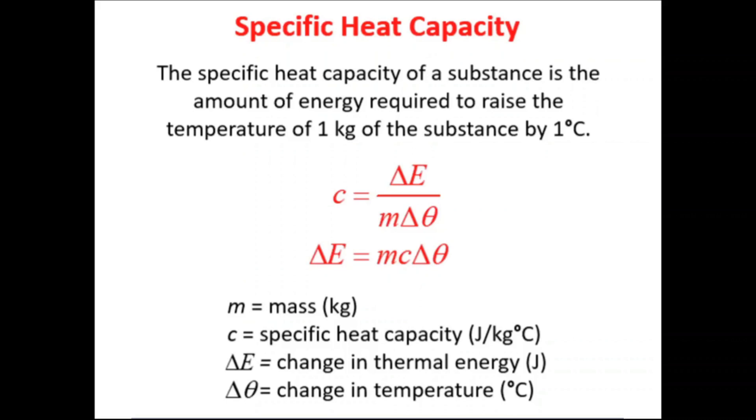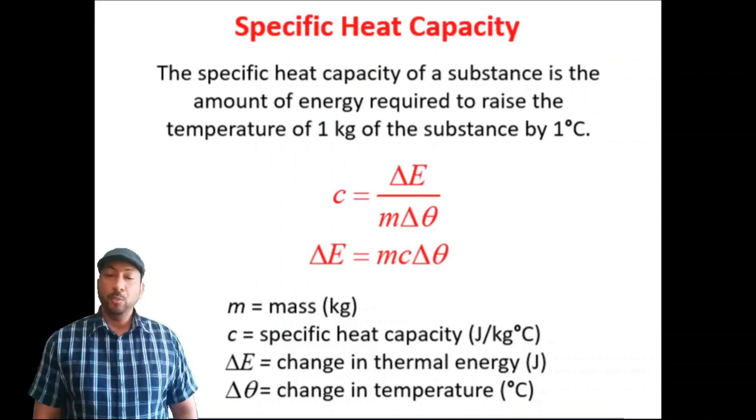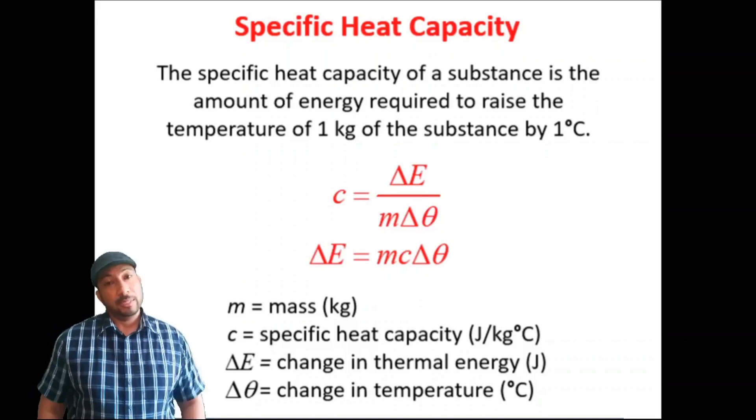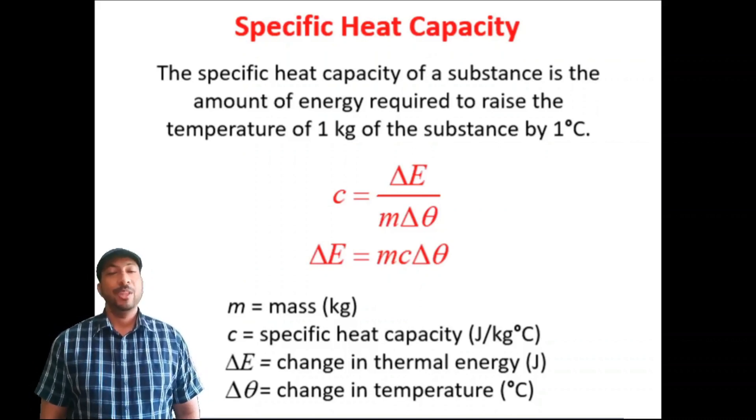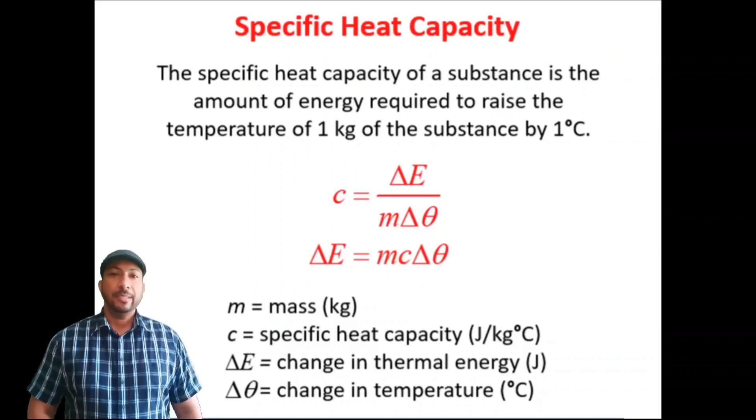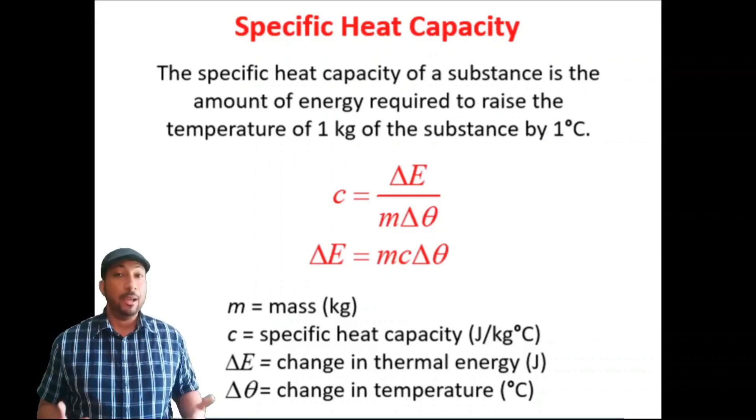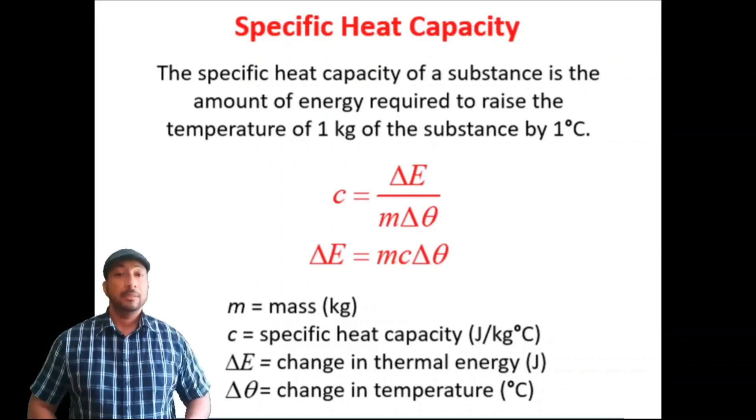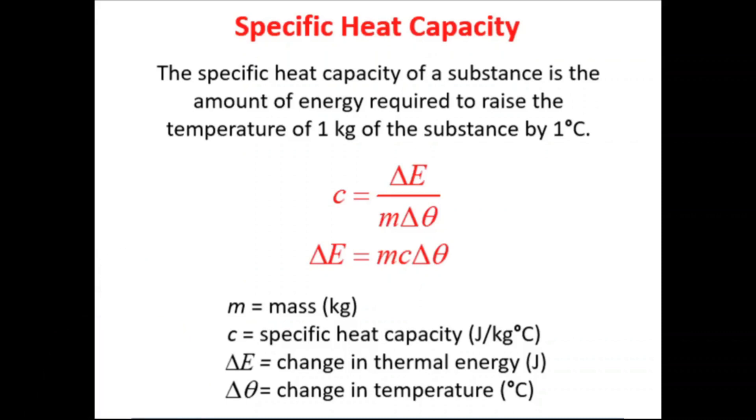We have our formulae: c equals delta E divided by m times delta theta, the change in temperature. Or rearranged, the change in energy is equal to the mass times the specific heat capacity multiplied by the change in temperature.